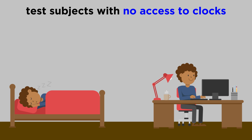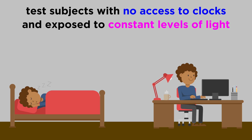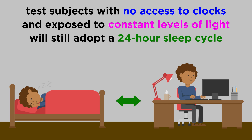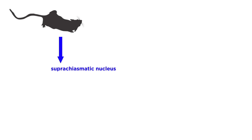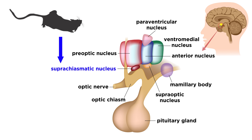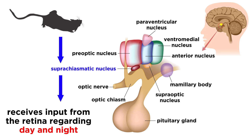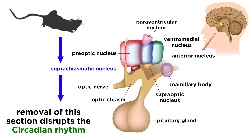Test subjects that have no access to clocks and are exposed to a constant level of illumination, thus removing any external cues regarding when one should sleep, still tend to sleep at intervals that approximate the 24-hour cycle, indicating that there is something innate about this cyclical behavior. Studies have been done with rats involving lesions to the suprachiasmatic nucleus of the medial hypothalamus, which receives input from the retina that communicates cues regarding day and night. These lesions disrupt the circadian periodicity of their sleep cycles, indicating that this timing mechanism is most likely housed in this region of the brain.